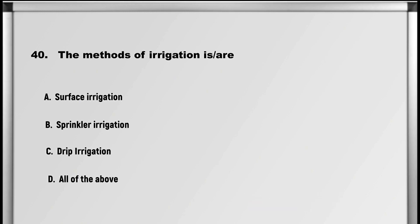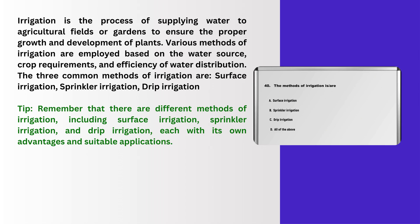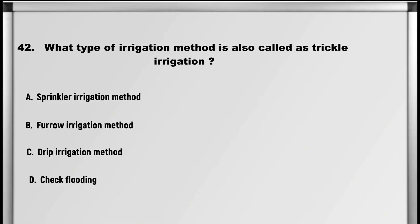Let's move on to question number 40: The methods of irrigation are: A. Surface irrigation, B. Sprinkler irrigation, C. Drip irrigation, D. All of the above. Irrigation is the process of supplying water to agricultural fields or gardens to ensure the proper growth and development of plants. Various methods of irrigation are employed based on the water source, crop requirements, and efficiency of water distribution. The three common methods are surface irrigation, sprinkler irrigation, and drip irrigation. Tip: there are different methods of irrigation including surface irrigation, sprinkler irrigation, and drip irrigation, each with its own advantages and suitable applications.